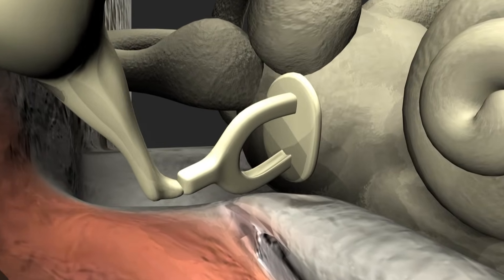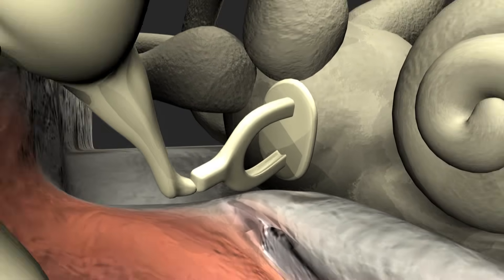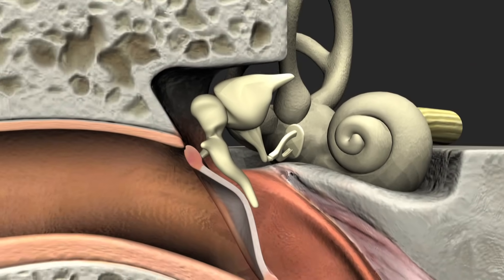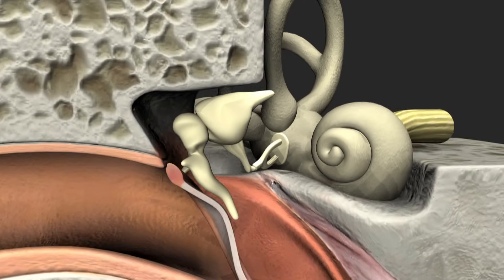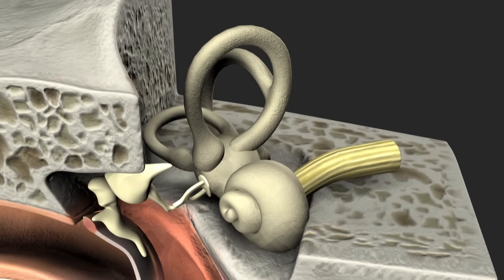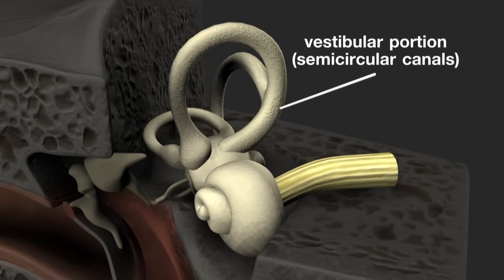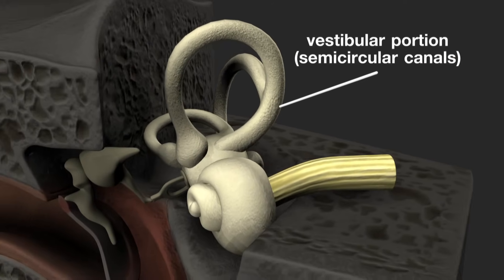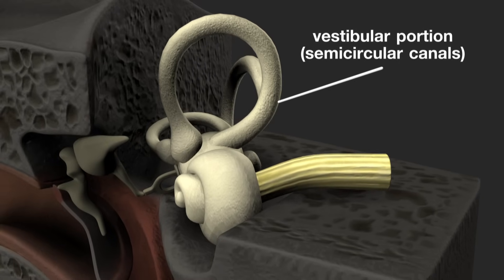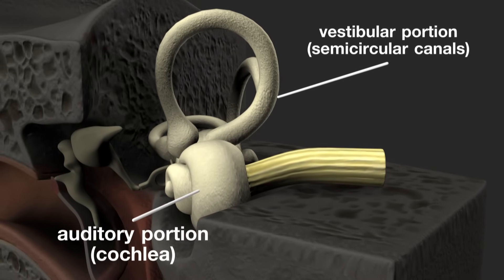The eardrum moves the malleus, which in turn moves the incus, and then the stapes, the footplate of which moves in and out of the oval window and transfers the energy to the endolymph fluid in the cochlea.